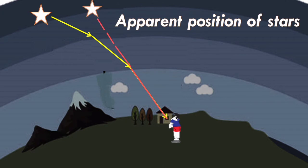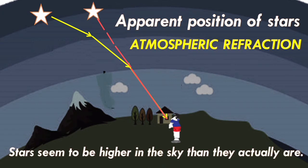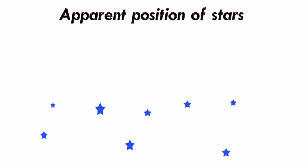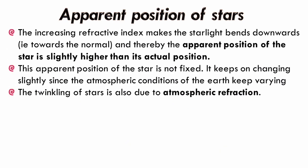Now, we have to also understand that the atmosphere continuously changes its optical density throughout the layers. So, the refraction of the light from the star is by different amounts at different moments. So, when the atmosphere refracts more light coming from a star, the observer feels that the star is brighter.